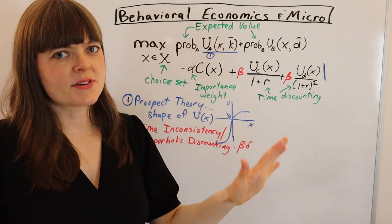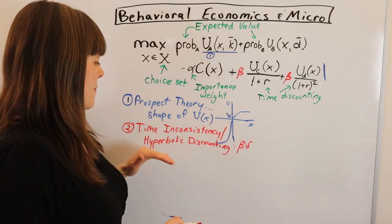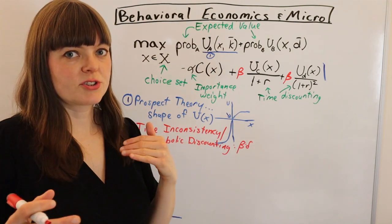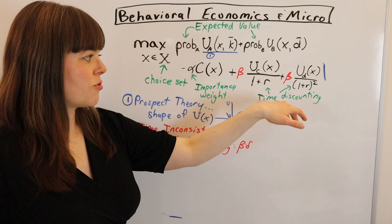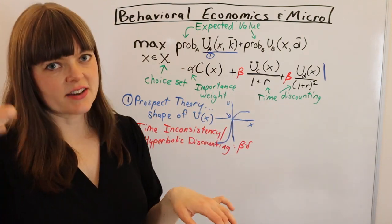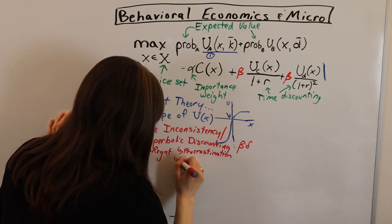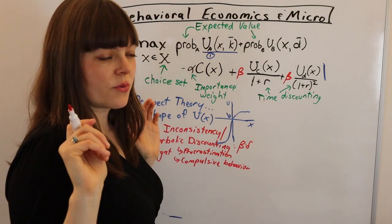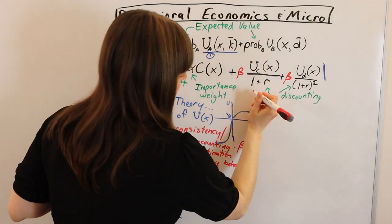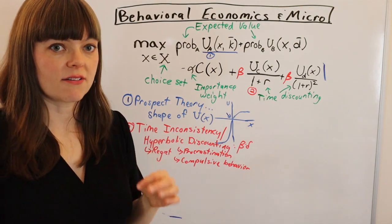So that concept actually requires probably a longer video to explain, but basically time inconsistency captures behaviors that cannot be captured through regular discounting, which include procrastination, compulsive eating and regret. So number two, time discounting, this is going to modify the time element in our classic model.